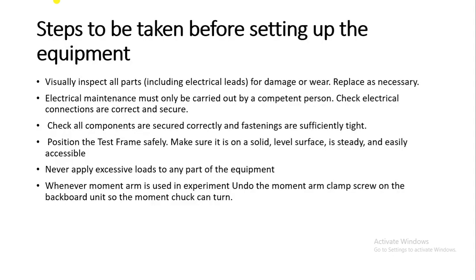Before every experiment, these steps should be followed. First, visually inspect all parts including electrical leads for damage or wear, and replace as necessary. Electrical maintenance must be carried out by a competent person — check that electrical connections are correct and secure. During experiments, check all components are secured correctly and fastenings are sufficiently tight.